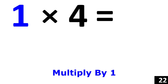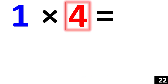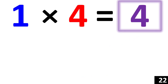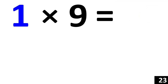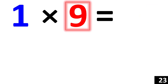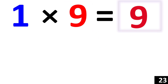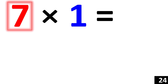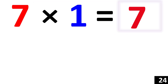Since we now know that any number times 1 is that number, that means 1 times 4 is equal to 4, 1 times 9 is equal to 9, and 7 times 1 is equal to 7.